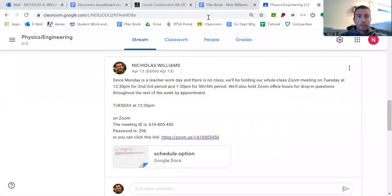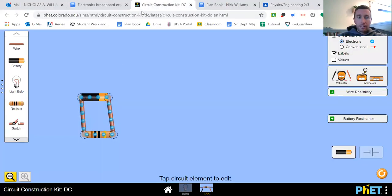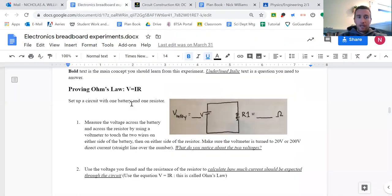We're gonna start by taking a look at our PHET circuit simulator, and I've started here by setting up a basic circuit. I'm doing the first experiment proving Ohm's law, V equals IR. So I need a battery connected to a resistor, and it says to measure the voltage across the battery and across the resistor by using a voltmeter to touch the two wires on either side of the battery, then on either side of the resistor.